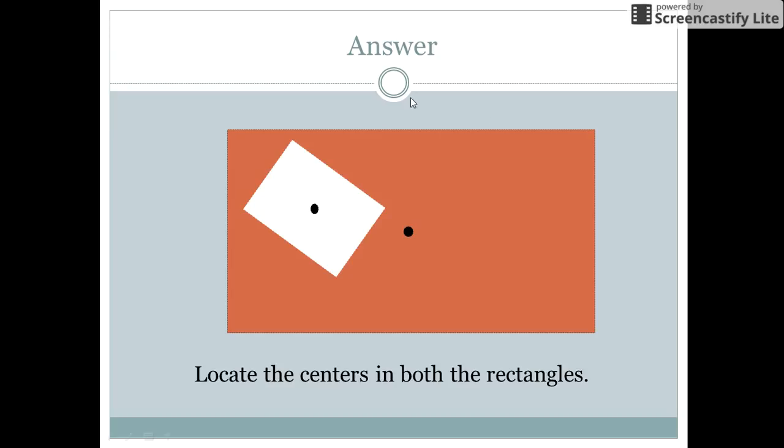Let me show you the answer. What we do is we locate the centers of both the rectangles. Now, it was stated in the puzzle that the removed portion of the cardboard is also a rectangle.